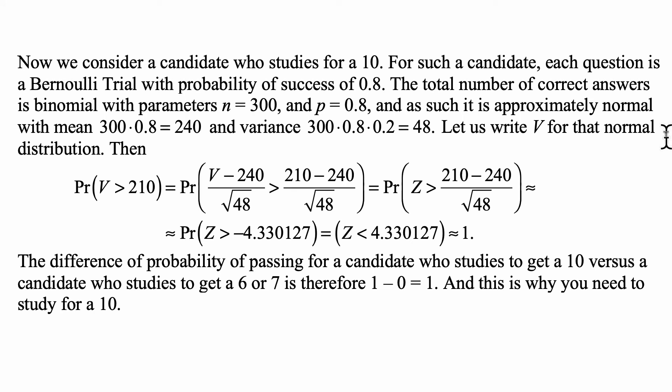Let us write V for that normal distribution. Then, the probability that V is more than 210 is the probability that (V - 240)/√48 is greater than (210 - 240)/√48. Well, that's equal to the probability that the standard normal random variable is greater than (210 - 240)/√48. That's the probability that Z is greater than -4.330127, and at this point you immediately know that's probability of approximately 1.